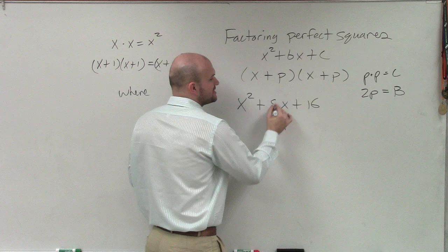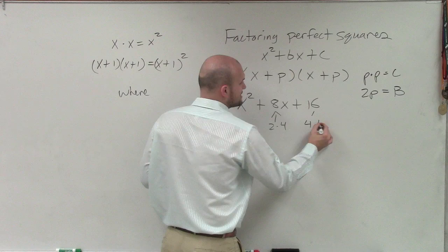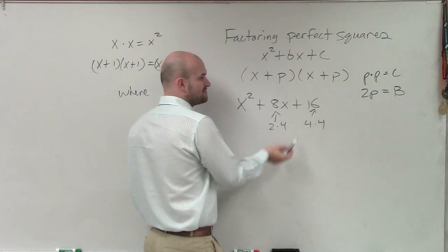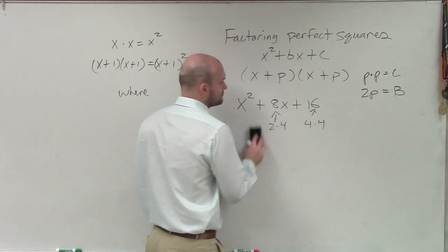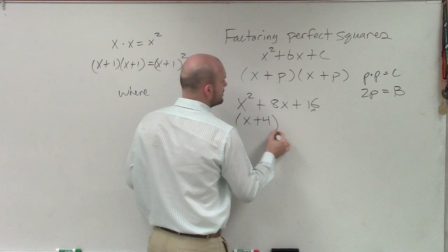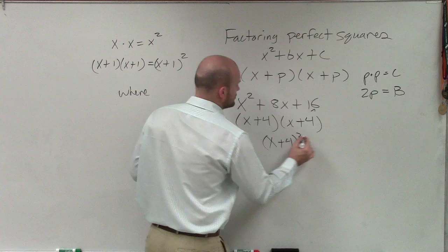However, if I wrote this as 8, you could say, yes, that is a perfect square trinomial. Because now I have 4 times 4 gives me 16. And now 2 times 4 gives me 8. So therefore, the factored form of this would be x plus 4 times x plus 4, or x plus 4 squared.